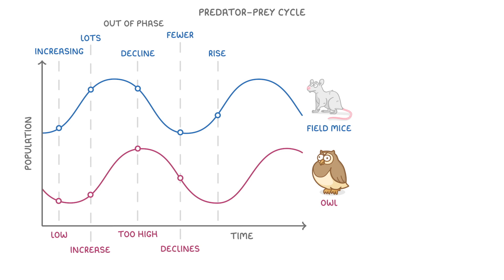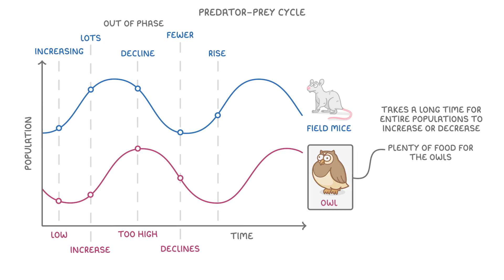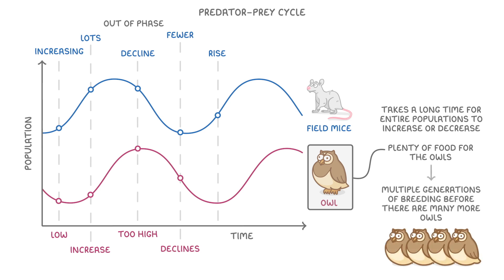The main reason that we get this cycle, rather than everything reaching a steady equilibrium, is that it takes a long time for entire populations to increase or decrease. For example, even if there is plenty of food around for the owls, it still takes multiple generations of breeding before there are lots more owls around due to the good source of food.